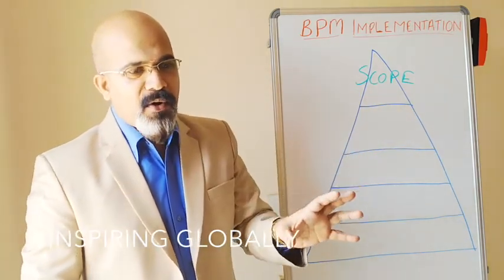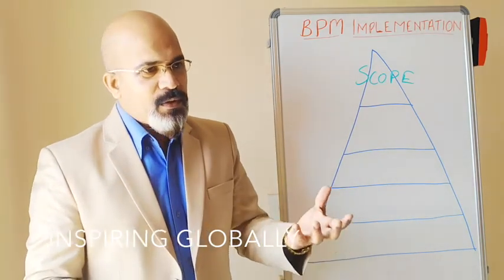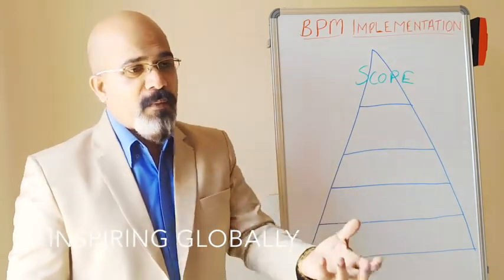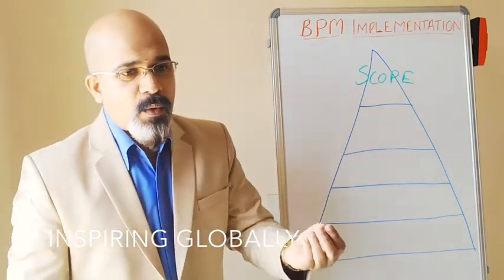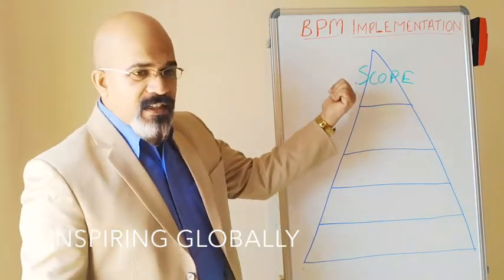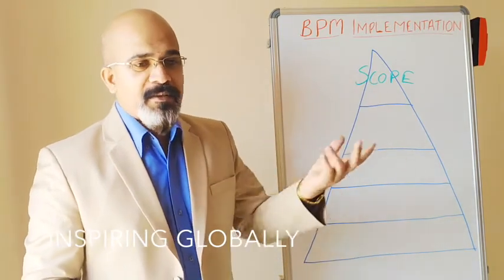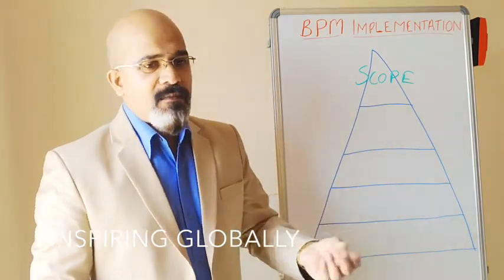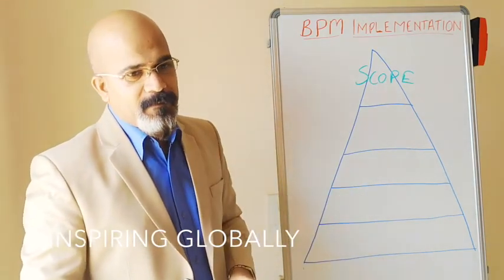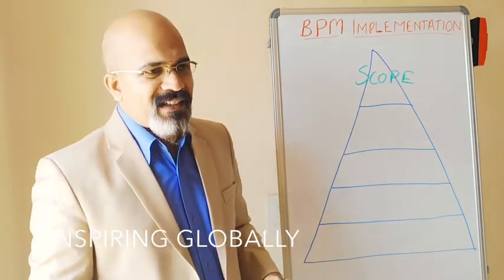When you understand the scope, you also need to identify what metrics to monitor — metrics that tell you whether your process is performing in an optimal or effective way. You need to collect all the processes, their metrics, who is responsible, and which department or division they belong to. Once you have that, you can move to the next step.